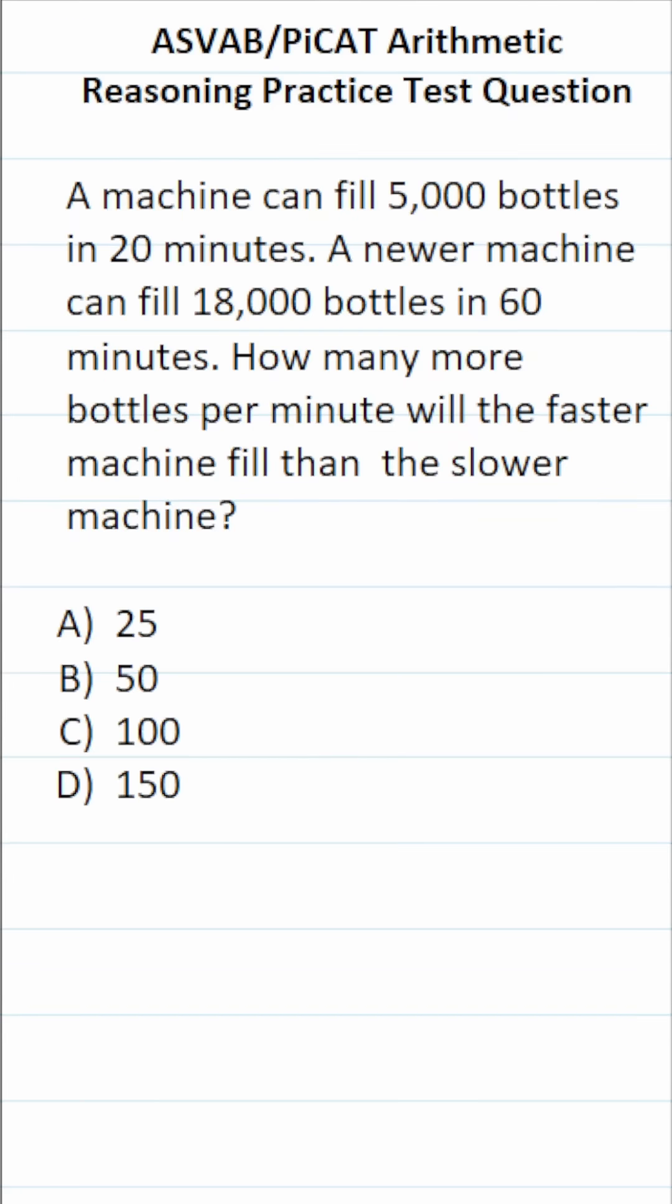This arithmetic reasoning practice test question for the ASVAB and PiCAT says, a machine can fill 5,000 bottles in 20 minutes. A newer machine can fill 18,000 bottles in 60 minutes. How many more bottles per minute will the faster machine fill than the slower machine?